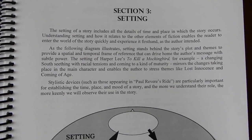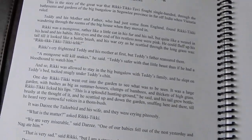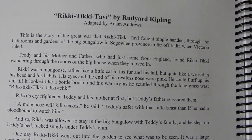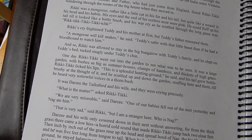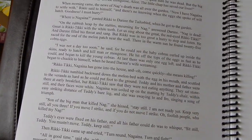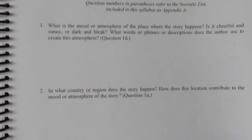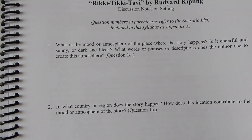Section three covers setting. He goes through Rikki-Tikki-Tavi and focuses on the setting using that short story, asking questions like 'What is the mood or atmosphere of the place where the story happens?'